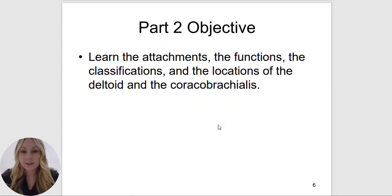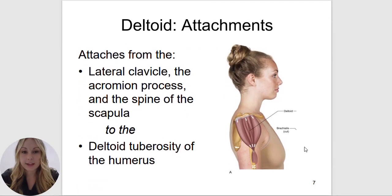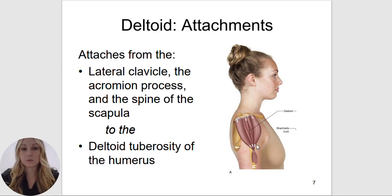We are going to review the deltoid and the coracobrachialis. The deltoid is divided into three different regions: an anterior, middle, and posterior region. It functions as one muscle, but depending on which area we are activating, it will do a different action. The anterior deltoid will be doing primarily shoulder flexion.